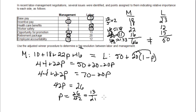Okay, so that means that the management side gets 13 21st of the retirement package, which means that labor would get 1 minus P. So 1 minus 13 21st would give us 8 21st.